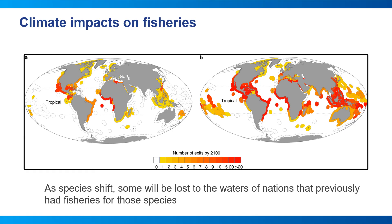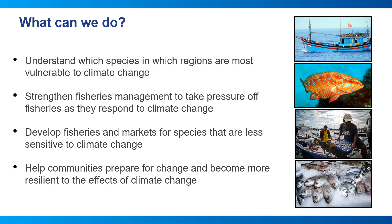EDF is working on developing climate-resilient management strategies — for example, more dynamic quota allocation mechanisms in the US, as well as identifying hotspots of future climate-induced fisheries conflict where collaborative governance mechanisms are needed. EDF is focusing on supporting the science needed to understand which species and regions are most vulnerable to climate change, advocating for policymakers to strengthen fisheries management, working with regional teams to develop fisheries and markets for species less sensitive to climate change, and helping communities prepare and become more resilient to the effects of climate change.